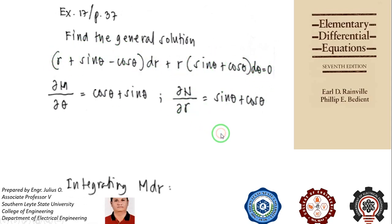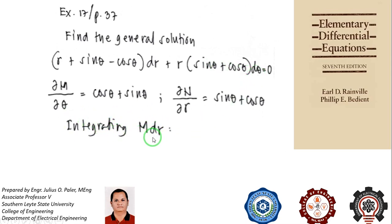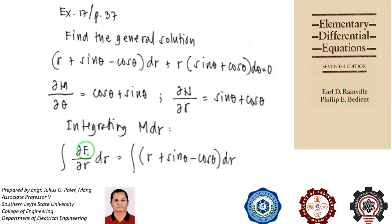We now proceed to the solution by integrating M dr. As presented in the first example, you could also integrate N dθ, but here we integrate M dr. M is the partial derivative of f with respect to r, and since we are integrating with respect to r, θ is treated as a constant.